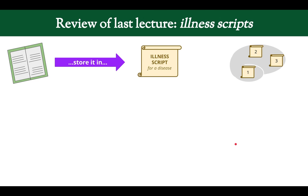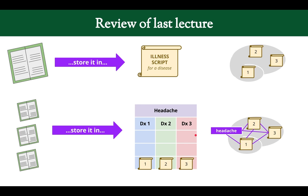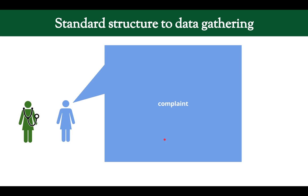In the last lecture we talked about illness scripts — how we use them to store knowledge from books about a disease and place them in our brain. More expert clinicians have a network of illness scripts based on a chief complaint. We create that network using illness script tables that help us compare and contrast different diseases — what's the same and what's different.